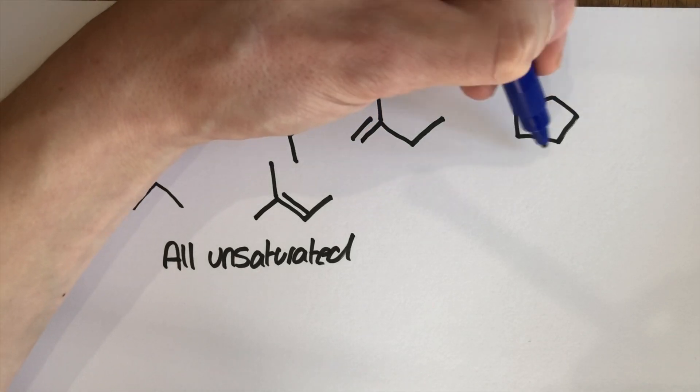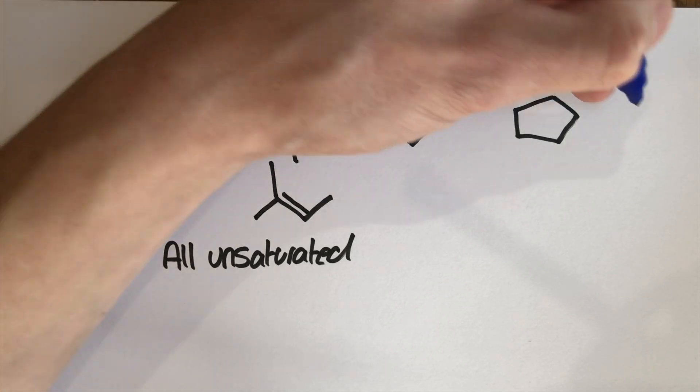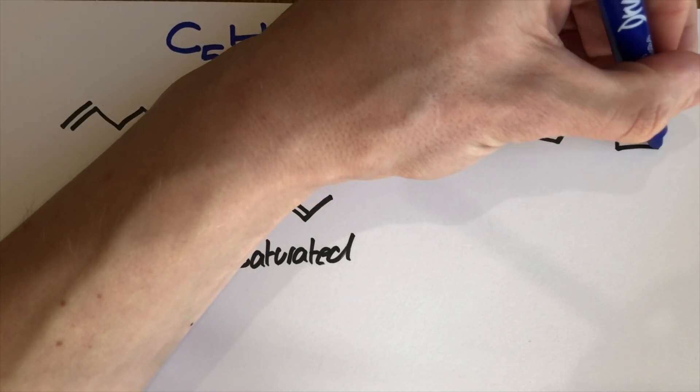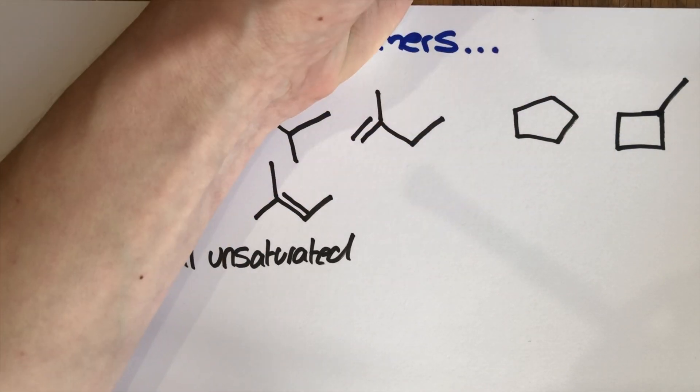I can then start playing about with this structure as well as long as I don't start randomly introducing double bonds. How I can mess about with this is I can create a four carbon ring with a branch so that would be methylcyclobutane.